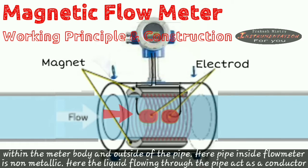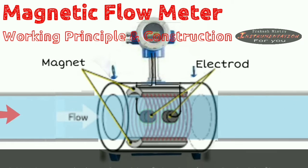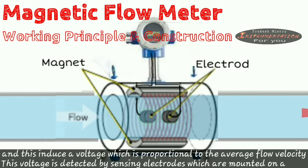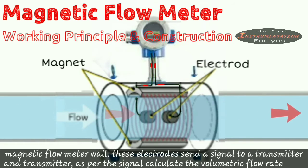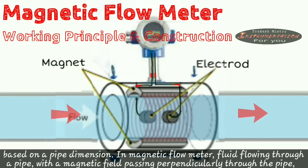Here the liquid flowing through the pipe acts as a conductor and this induces a voltage which is proportional to the average flow velocity. This voltage is detected by the sensing electrodes which is mounted on the magnetic flow meter wall. These electrodes send a signal to a transmitter, and transmitter as per the signal calculates the volumetric flow rate based on the pipe dimension.